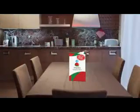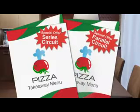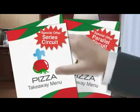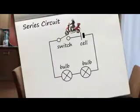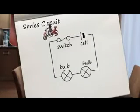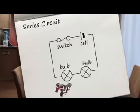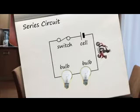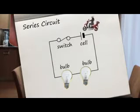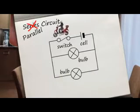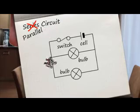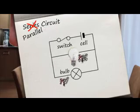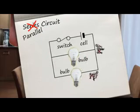Circuits come in two variations: series and parallel. But what's the difference? In a series circuit, there is only one possible route for current to get from one side of the cell to another. In a parallel circuit, it can take more than one route — it can go through this bulb or through this one.